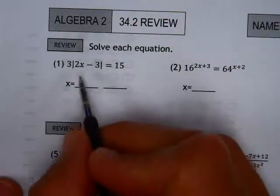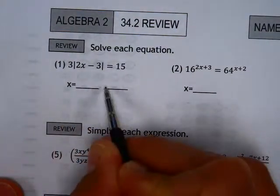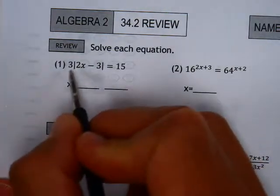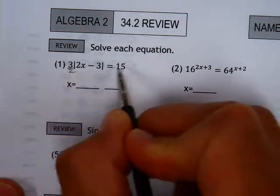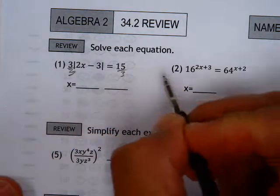So as you see here, we have an absolute value, which means we're going to have two solutions. Two solutions we can find once we kind of, oops, that's a three, once we clear some stuff up here.